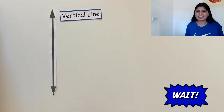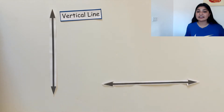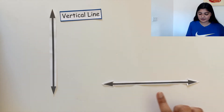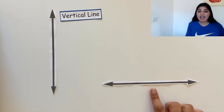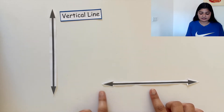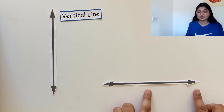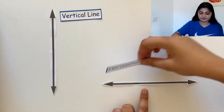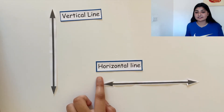But wait, what if I took this same line and laid it on its side? This line is still straight and it continues left and right. We call this line a horizontal line.